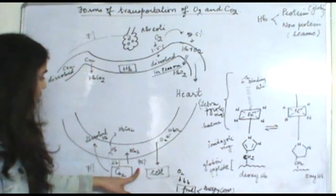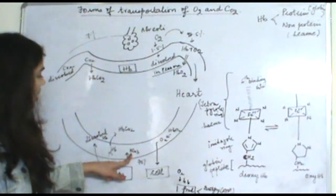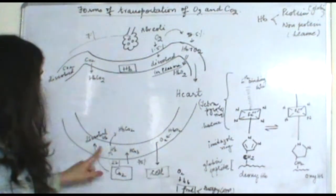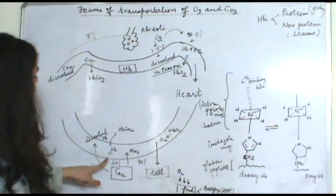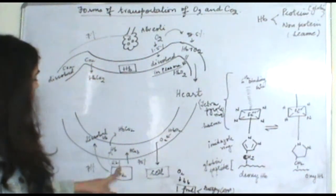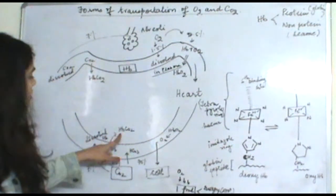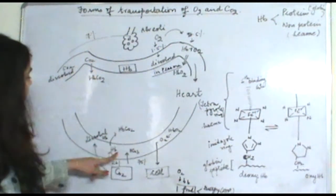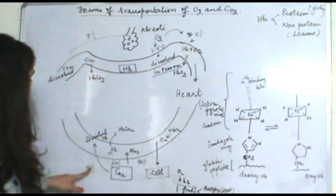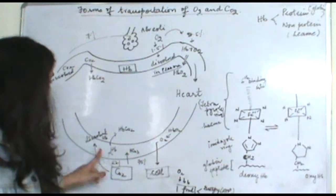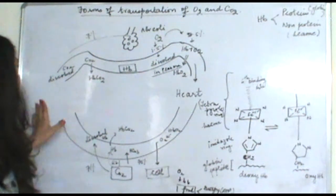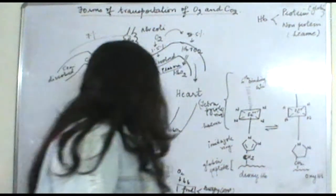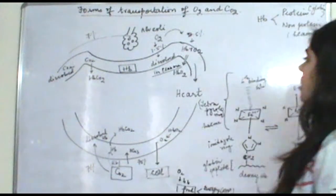Now that CO₂ — taking it as 100% — is transported in the following ways: 70% of CO₂ dissolves inside the blood plasma. About 23% is converted into the form of HCO₃⁻ (bicarbonate). The remaining 7% combines with hemoglobin and forms carboxy hemoglobin. So this is how CO₂ is transported inside your body.